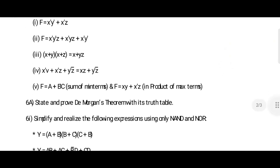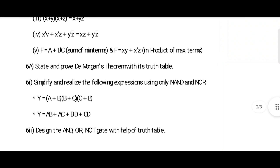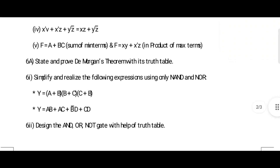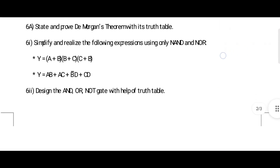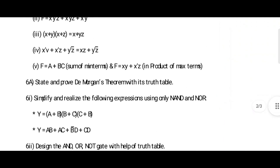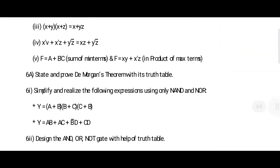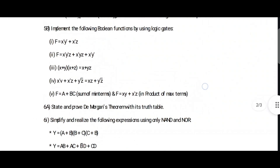After that: 'State and prove De Morgan's theorem with the truth table' — this is very important. Then: 'Simplify the boolean expression and get the output' — this is also important, this question may come. Also: 'Design the AND, OR, and NOT gates.' All these questions are important. Read the first and fifth ones and part AB first.